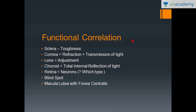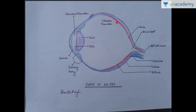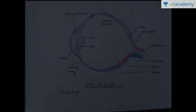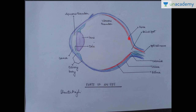The sclera gives toughness to the eye. The cornea helps in refraction and, being transparent, helps in transmission of light. The lens, adjusted by the ciliary body, changes focal length so you can see objects near or far. The choroid's function is total internal reflection — light not absorbed by the retina is reflected back onto it due to the choroid's greater refractive index. The macula lutea is a spot on the retina where certain cells are more concentrated, and its central most part is known as the fovea centralis.